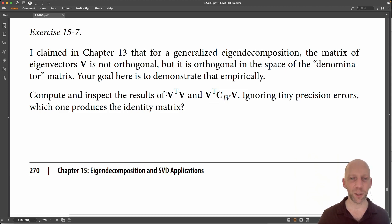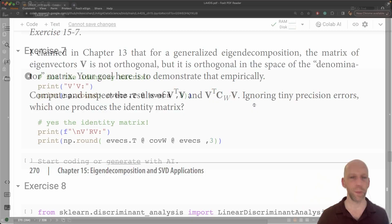So again, you just empirically confirm that this is not the identity matrix, and this is the identity matrix.